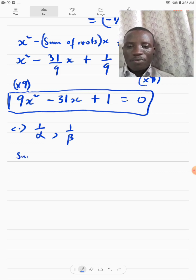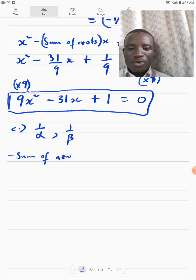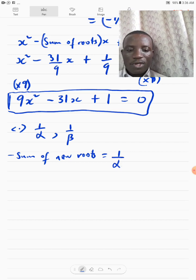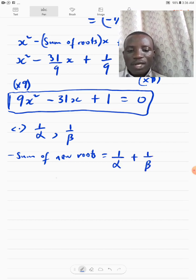So, it says sum of new roots. New roots will be 1 over alpha plus 1 over beta. And then, we find the LCM.